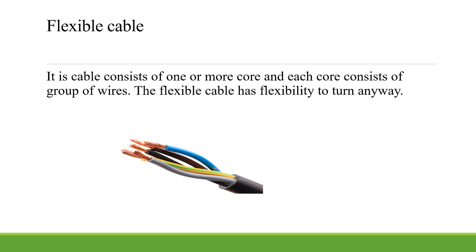Flexible cable consists of one or more cores — first core, second, third, fourth and fifth. Each core consists of a number of wires, or a group of wires. Flexible cable consists of one or more cores and each core carries a group of wires. The flexible cable has flexibility to turn anywhere.